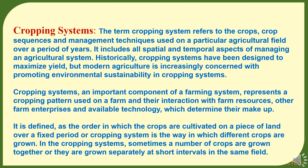First we will discuss about cropping systems. The term cropping system refers to the crops, crop sequences and management techniques used on a particular agricultural field over a period of years. It includes all spatial and temporal aspects of managing an agriculture system. Historically cropping systems have been designed to maximize yield, but modern agriculture is increasingly concerned with promoting environmental sustainability in cropping systems.